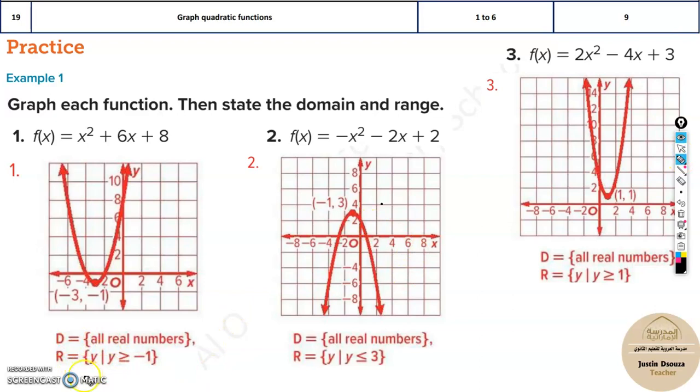But what about the range? Domain is for the x values, this is the domain, x values. Range is the y values, the y-axis. Let's see, over here it's the y. This is the range. Now what about the range? Depending on where it opens up and where it begins, you need to write the range. Once you know the graph, it's very easy from the graph.